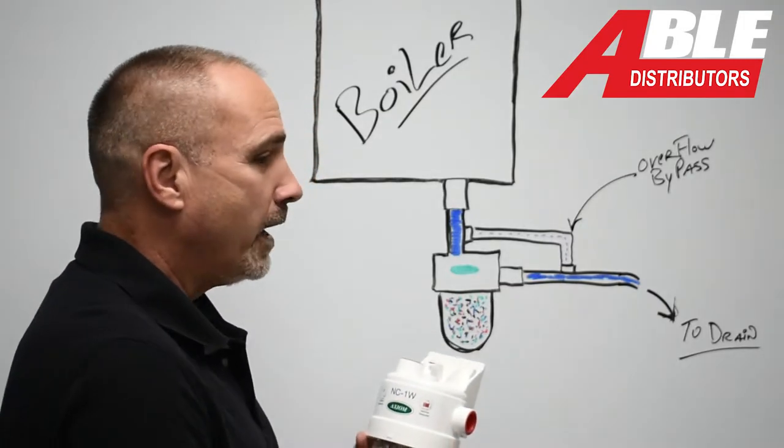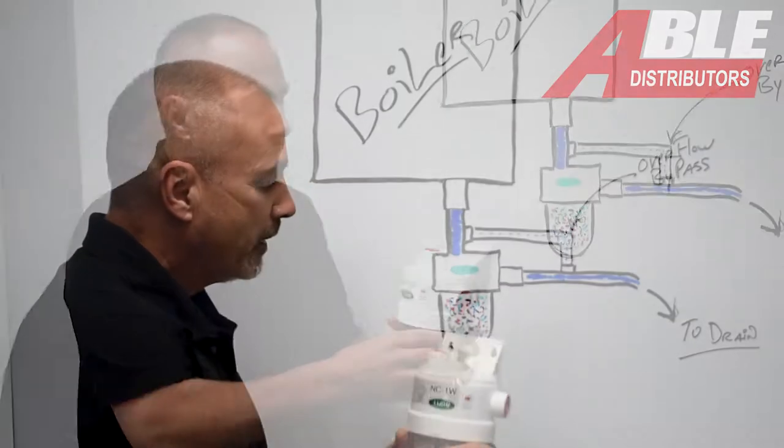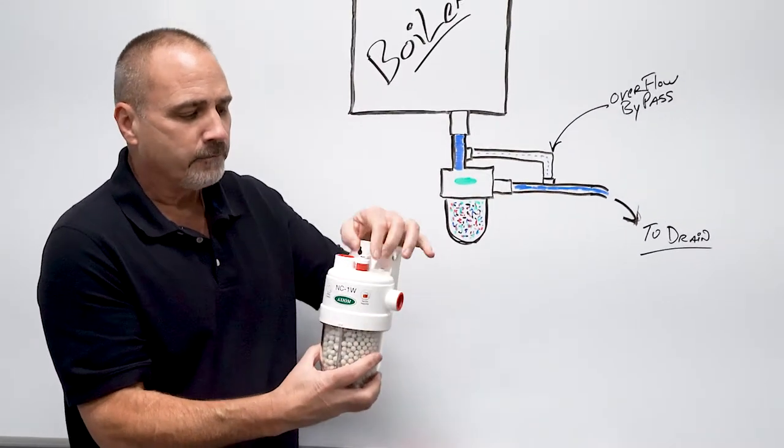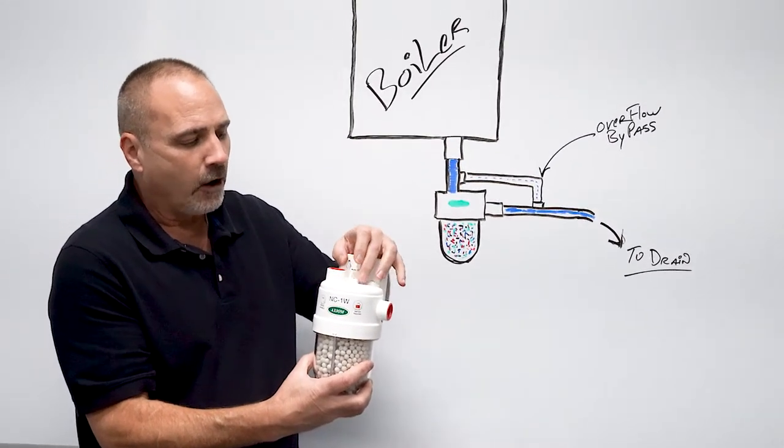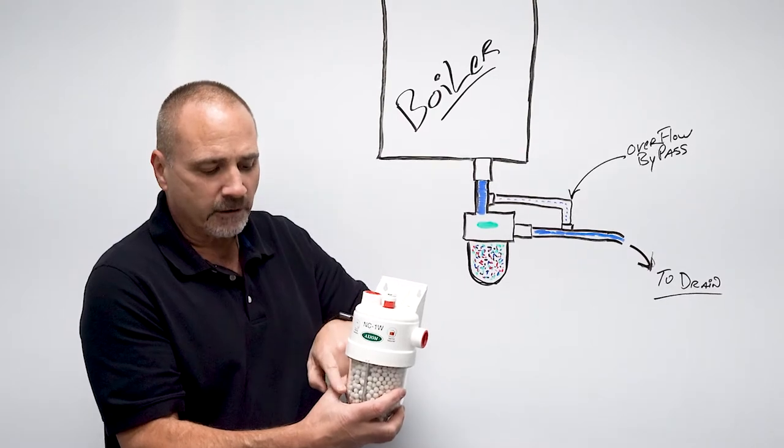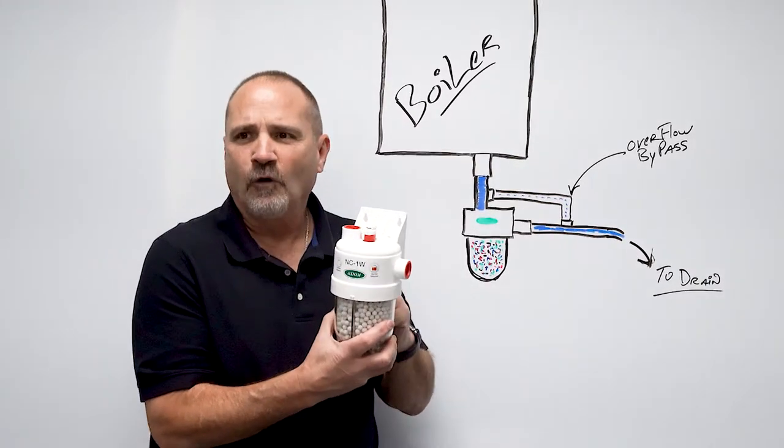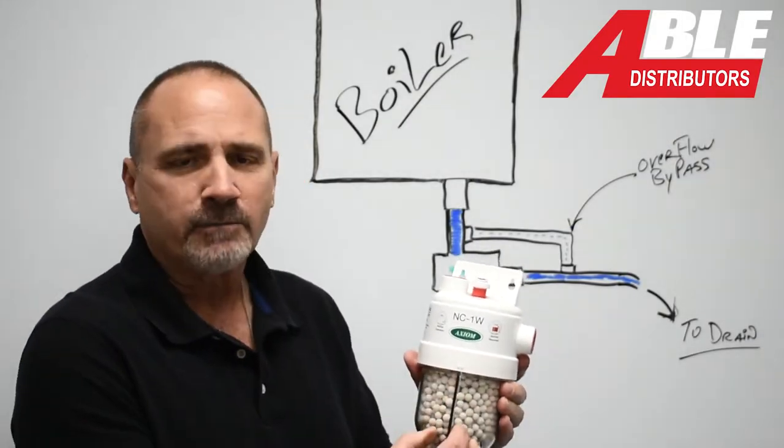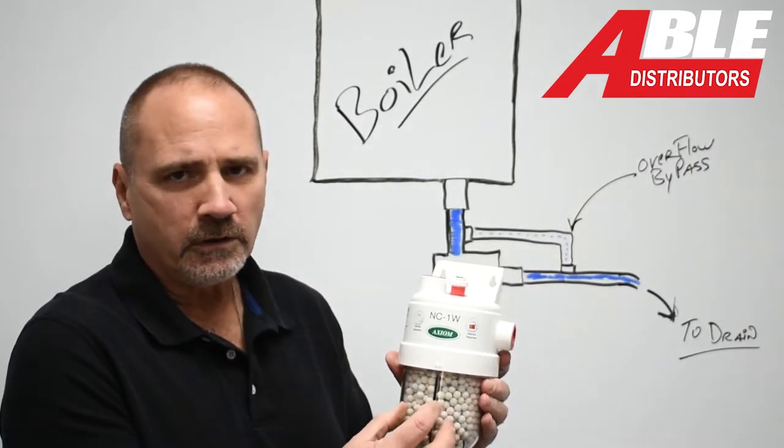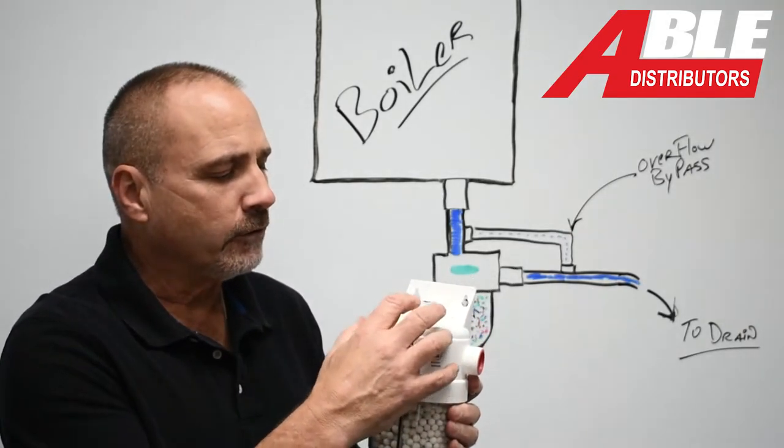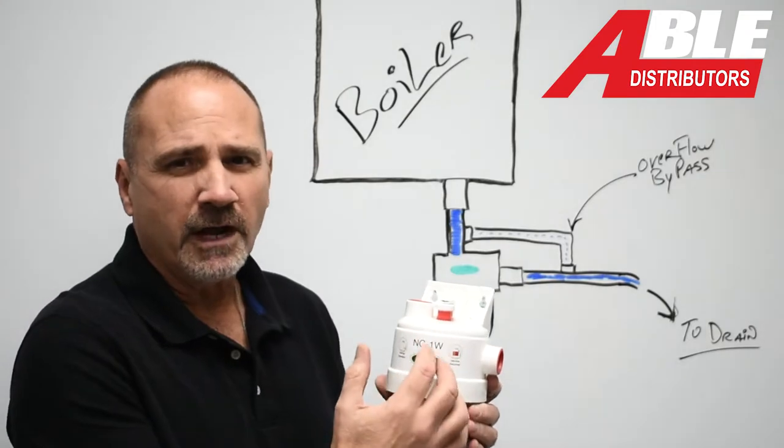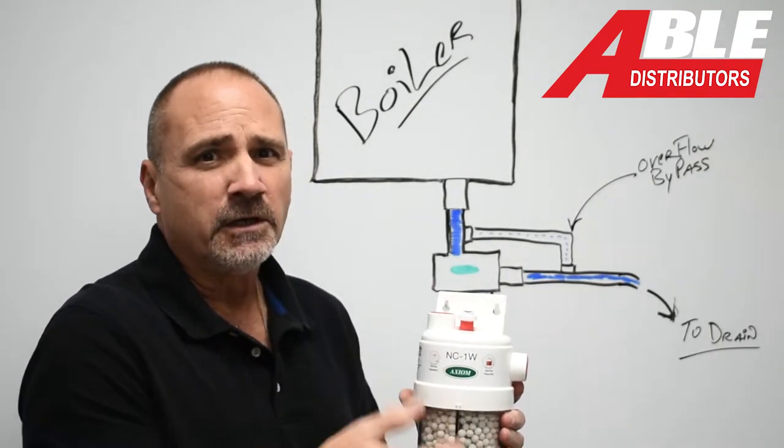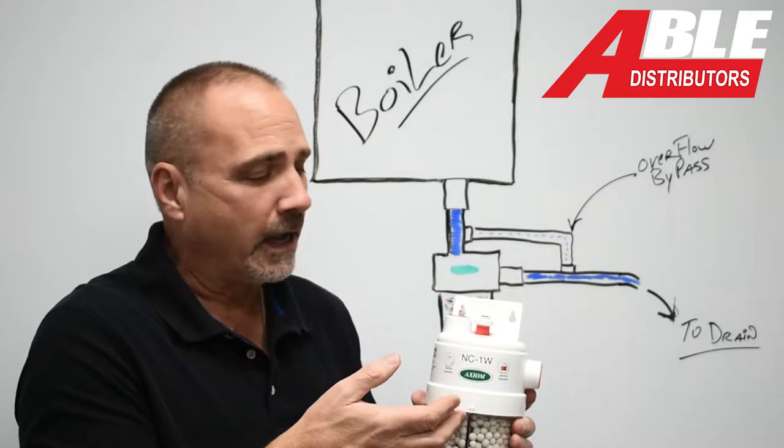This does have a little pop-up float, and all that does is let you know that something happened, that this thing got full at one point, whether it got plugged up or these deteriorated enough and wasn't letting water flow through. It just lets you know that on your next checkup, if you see this is up, you know at one point the water level got high.